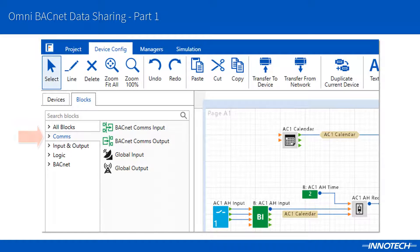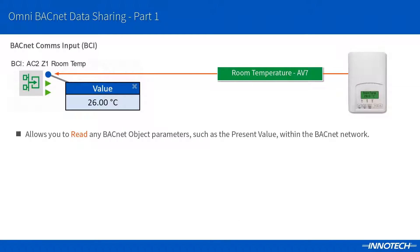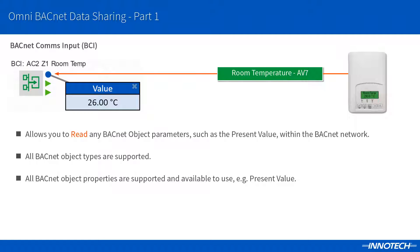In the Focus programming software, you can access the BACnet Comms blocks via the Comms group. This consists of the BACnet Comms Input or BCI and the BACnet Comms Output or BCO. These blocks allow us to configure the BACnet data sharing options within OMNI and external objects on other BACnet devices. The BCI block allows you to read back any supported BACnet object and property value. There are many property types to select from as listed by the BACnet standards, and the most common property used is the object's present value, which provides the actual value reading of the object.